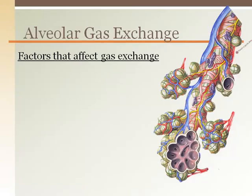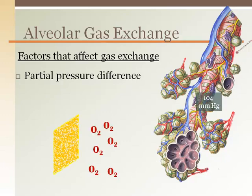The function of the respiratory system is first to get oxygen to the alveoli and then to get the oxygen to enter the blood onto the red blood cells for delivery to the cells throughout the body. There are a number of factors that affect how easily oxygen can cross the alveolar membrane and hop onto red blood cells in the blood. The partial pressure difference is important because you need to have a higher oxygen content in the alveoli than in the blood, so oxygen will want to go out of the alveoli and into the blood.